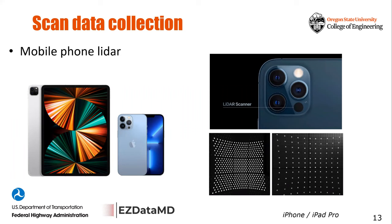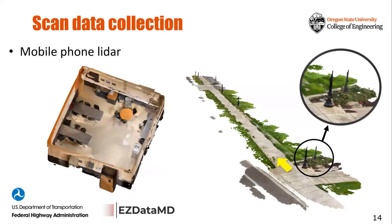Another interesting scanning system is the Apple LiDAR sensor added to iPhone Pro models. You can collect point cloud data using this very low-cost scanning approach. As CTO of the EGData company, we are working on a project with the Federal Highway Administration hoping to use mobile phone LiDAR data to create digital twins of highway constructions. We are evaluating many different apps and data quality to see if it's feasible to use this data for construction applications.